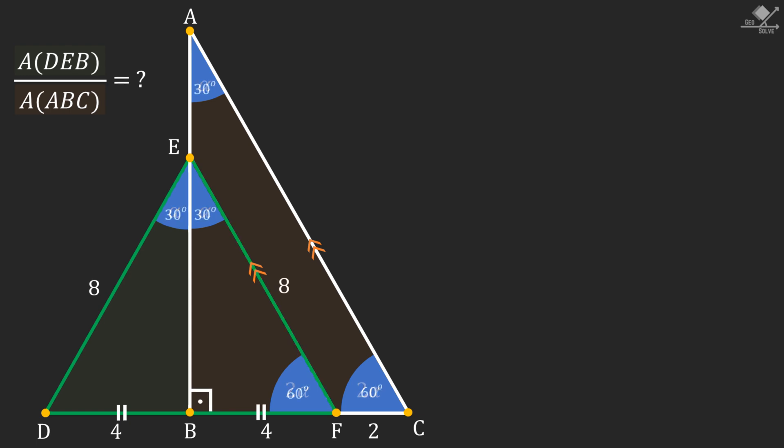Now we have 30-60-90 triangles that we can use to find the heights of the triangles. From here, line segments EB and AE can be calculated as 4 times square root of 3 and 2 times square root of 3 respectively.